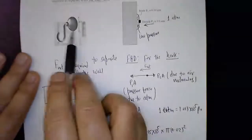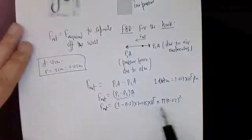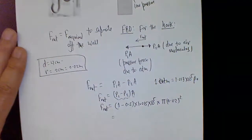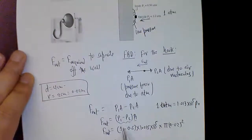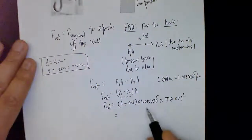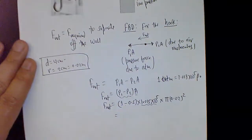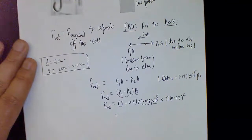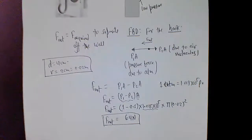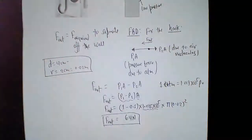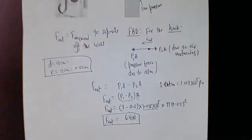Make sure pressures given in atmospheres are converted to Pascals. Calculating: 0.5 × 1.013 × 10⁵ × pi × (0.02)² gives approximately 64 Newtons. That's the net force required to separate the wall hook off the wall.